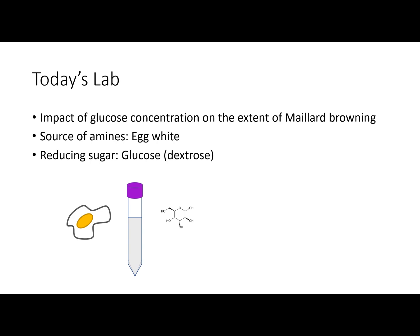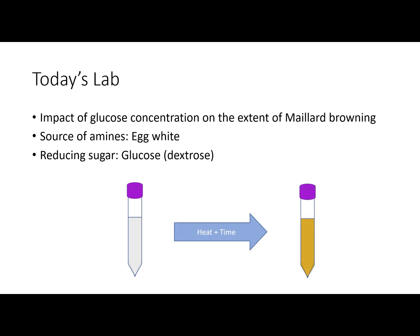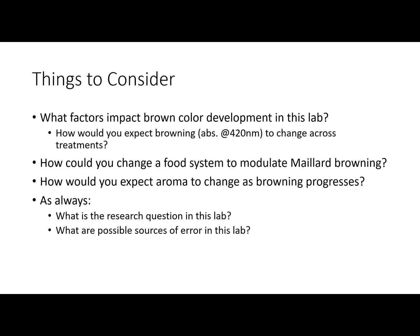Today's lab we're going to focus on the impact of glucose concentration on the extent of Maillard browning. We'll take a series of different test tubes and add different concentrations of glucose solutions ranging from a control — which is just water — through 1%, 2%, 3%, up to 10% glucose solution. Then we'll add egg white in the form of egg white powder and heat those together over time to see how that impacts the color. We'll heat the mixture in a boiling water bath for an hour and then measure the absorbance at 420 nanometers to see how much brown color developed.